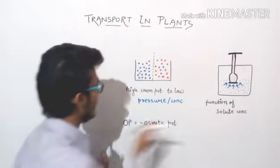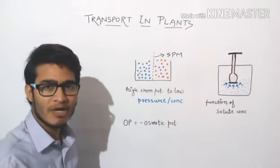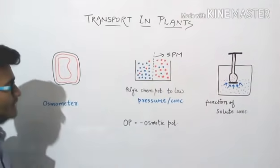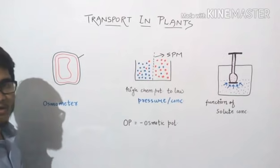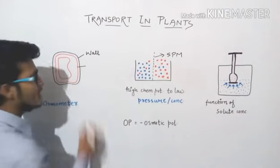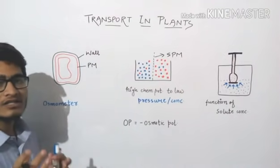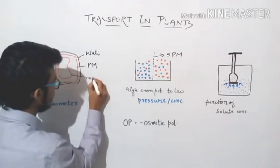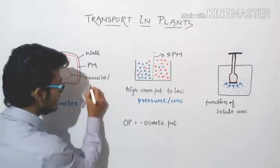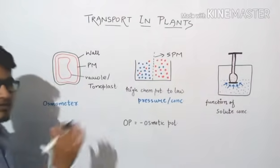There is always a semi-permeable membrane (SPM) present between the two chambers separating them, where the movement of water occurs. Let's take an overview of the whole cell. This is the outer cell wall. Inside it we have a cell membrane or plasma membrane, and inside that we have a very large vacuole. The outer membrane of the vacuole is called the tonoplast.